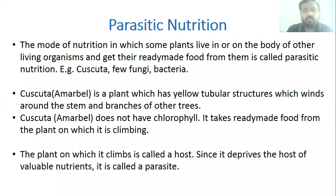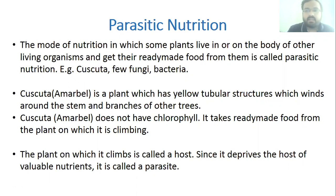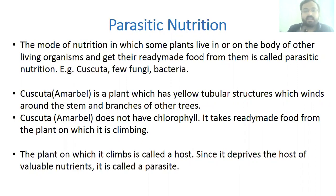The next mode is parasitic nutrition. In this mode, some plants live in or on the body of other living organisms and get their ready-made food from them. One plant grows around another and obtains nutrition from it, living in close association with that plant and absorbing its nutrition.